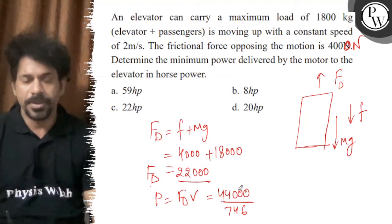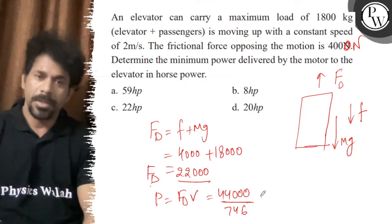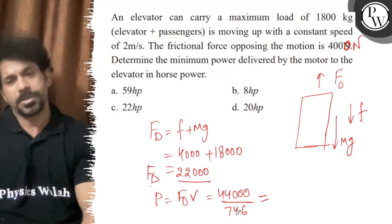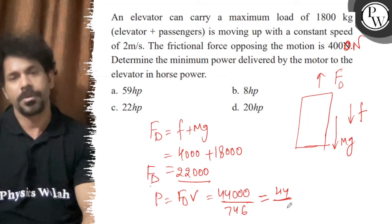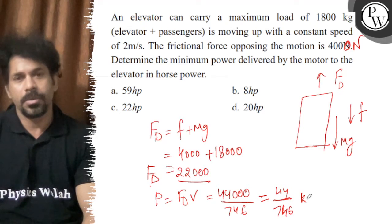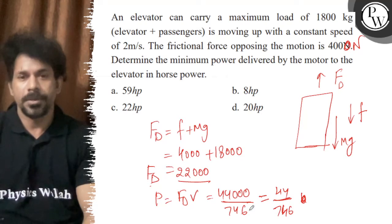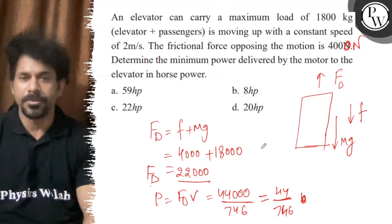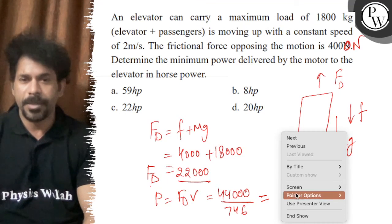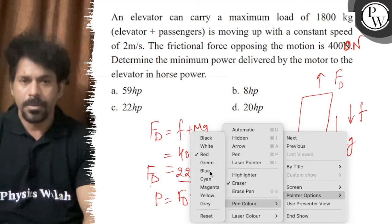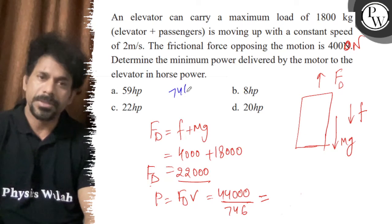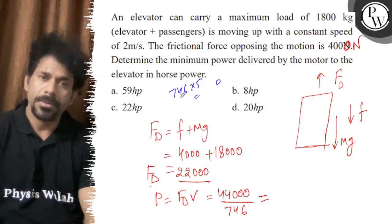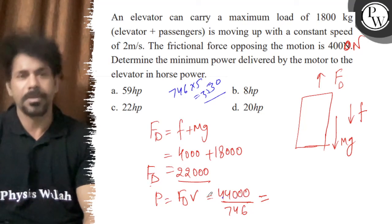To convert to horsepower, we divide 44000 by 746. Multiplying out: 746 times 59 gives approximately 44000, so the answer is approximately 59 horsepower.